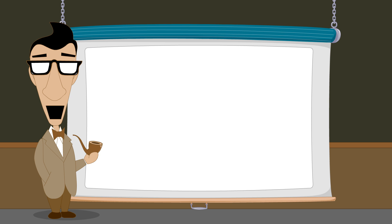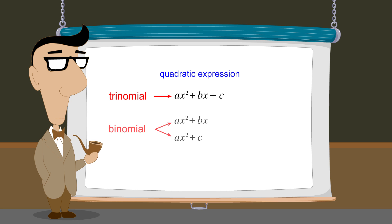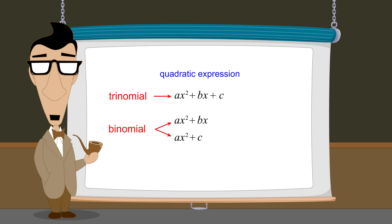So a quadratic expression is a second-degree polynomial which, as we have seen, can be a trinomial, a binomial, or a monomial.